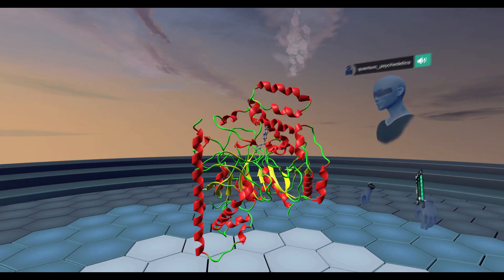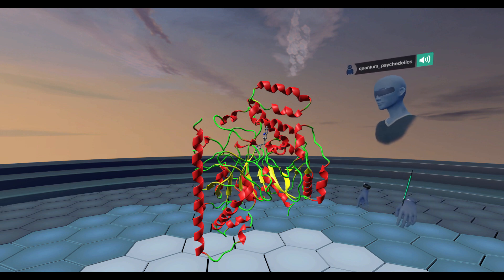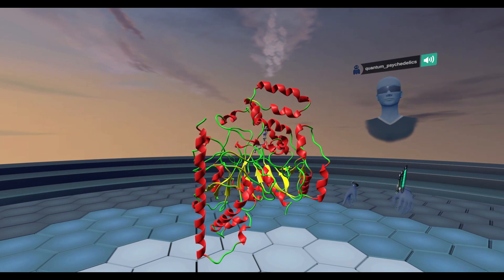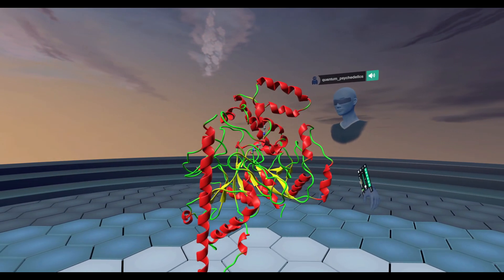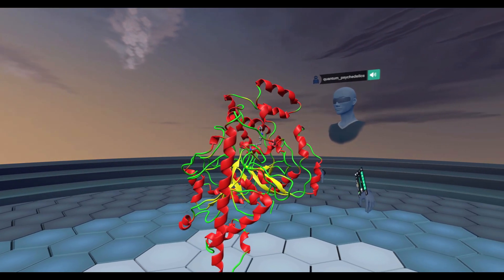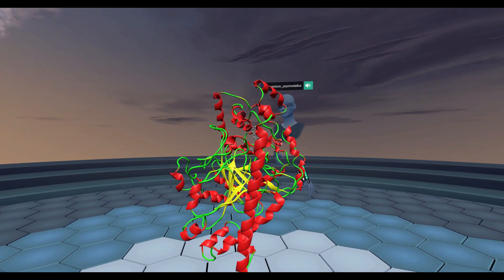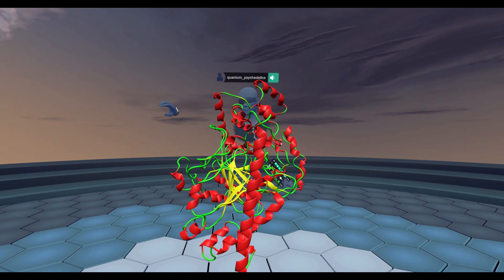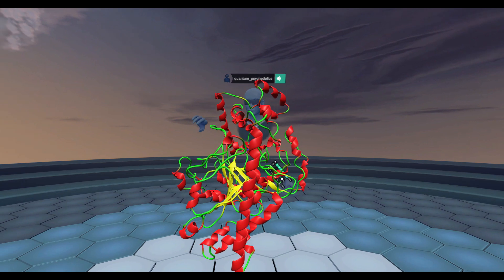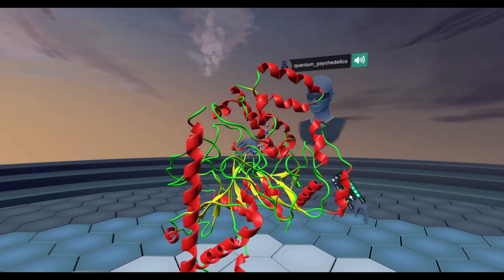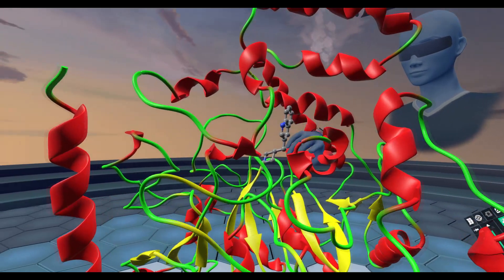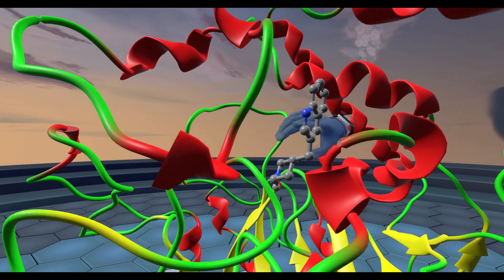What we have here is the first enzyme that breaks down endocannabinoids. This is called FAAH, or fatty acid amidhydrolase, and this enzyme specifically breaks down anandamide. The anandamide molecule comes into the active site of the receptor, which is located right here.